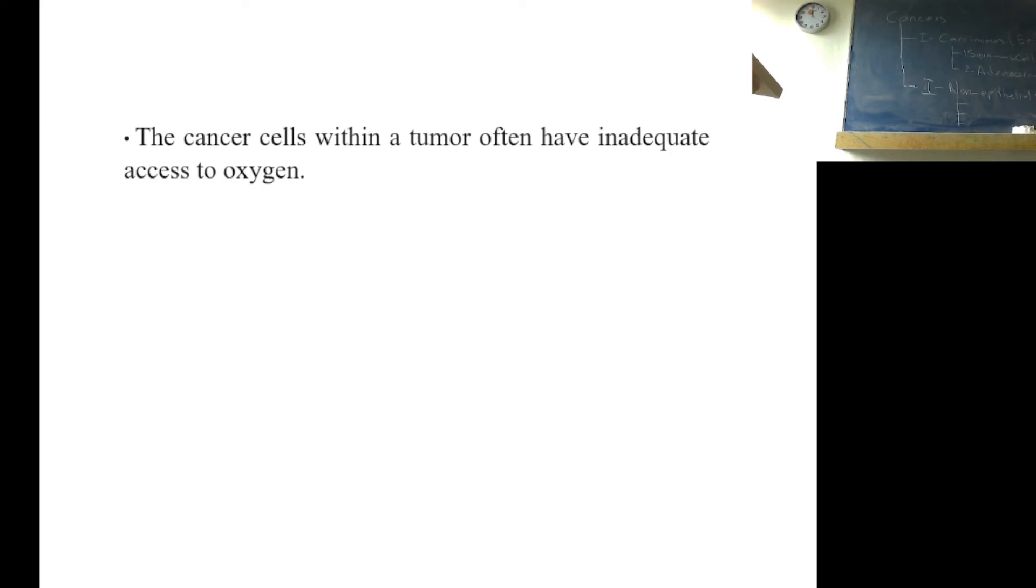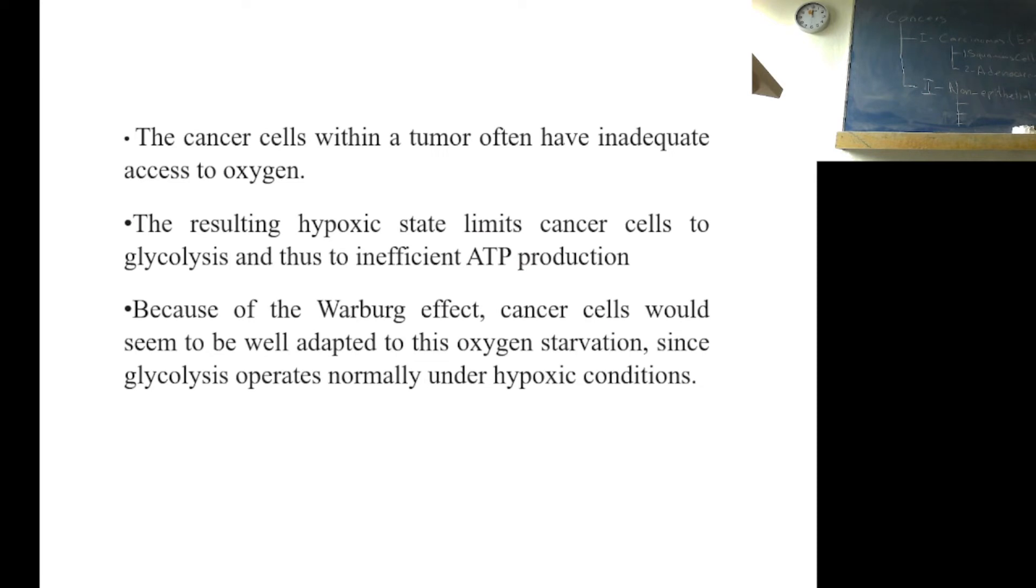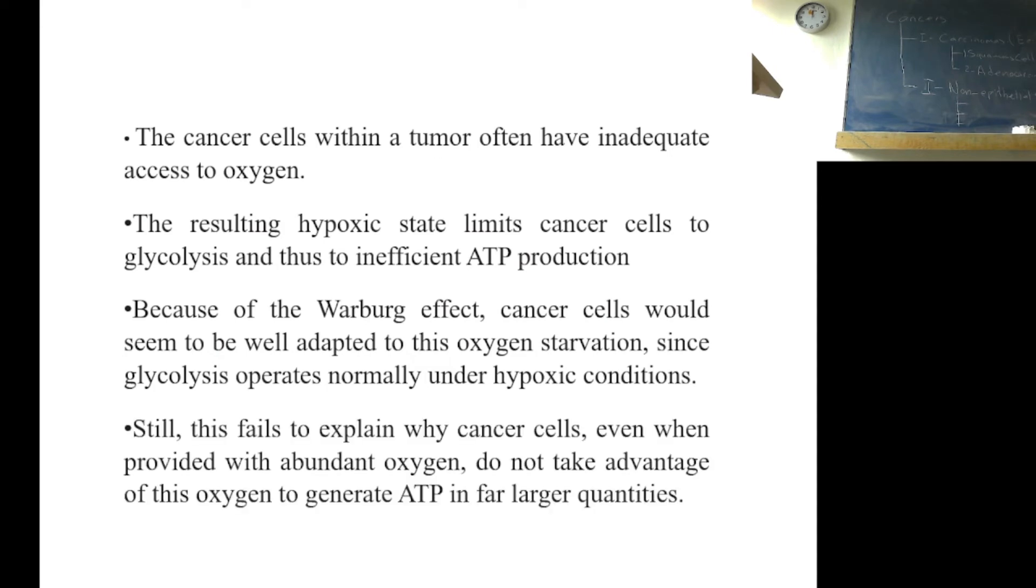The tumor cells generally have more restricted access to oxygen compared to normal cells, because there are many more cells in the same area and insufficient blood supply reaches there. This occurs during tumor development. This would seem to force cells to glycolysis and thus have inefficient ATP production. Because of Warburg effect, cancer cells would seem to be well adapted to this oxygen starvation since glycolysis operates normally under hypoxic conditions. Still this fails to explain why cancer cells, even when provided with abundant oxygen, do not take advantage of this oxygen to generate ATP in far larger quantities.